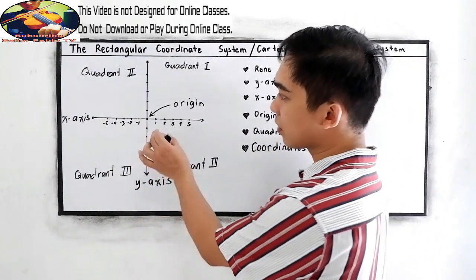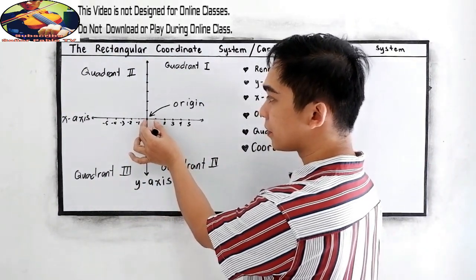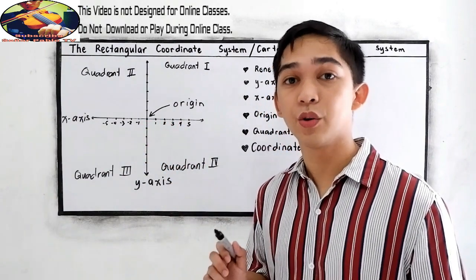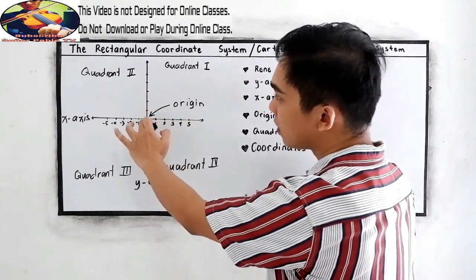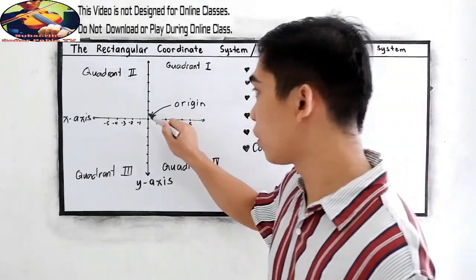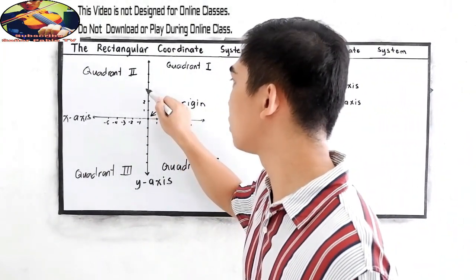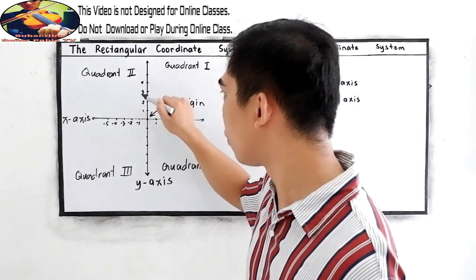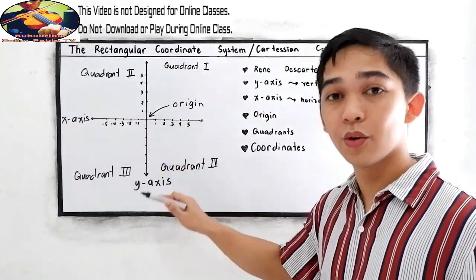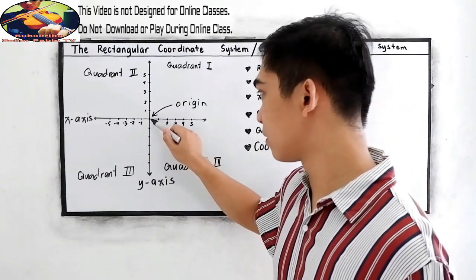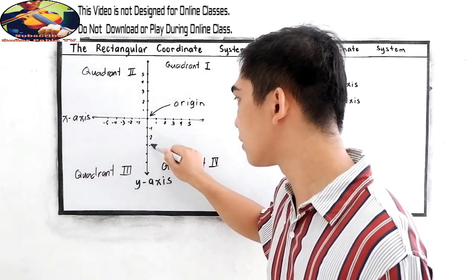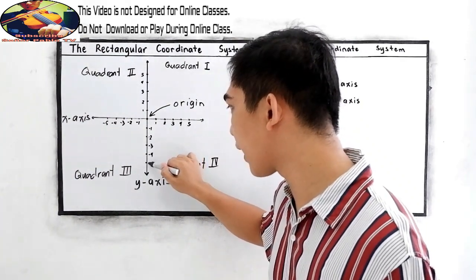Make sure that you have calibrated the distances into equal parts, because that indicates our units. Upward from our origin, we have the positive numbers: one, two, three, four, and five. And below our origin, we have the negative numbers: negative one, negative two, negative three, negative four, and negative five.